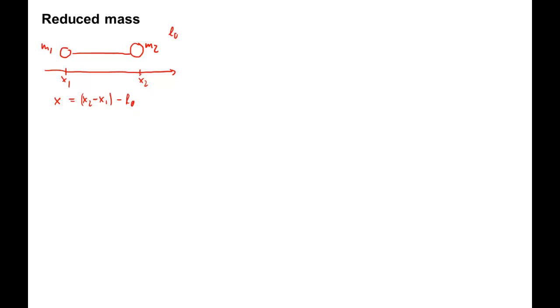If we stretch the spring, there will be a restoring force that pulls the spring back into its equilibrium. Let's combine Newton's second law and Hooke's law and write down the equations of motion for the two masses. For mass 1, m1 times d squared x1 dt squared equals plus kx. The plus sign means that after extension, the spring pulls the mass to the right.